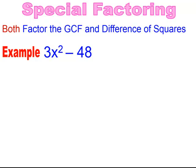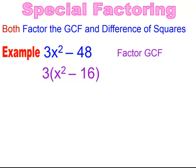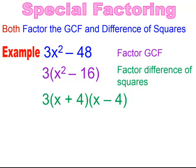If something looks like the difference of two squares but the terms are not perfect squares, check if there's a GCF first. Factor out the GCF — in this case 3 — and you'll see the difference of two squares remains. Always factor out the GCF first, then factor the difference of two squares, keeping the GCF attached in front. The result is 3(x + 4)(x − 4), or 3(x − 4)(x + 4).